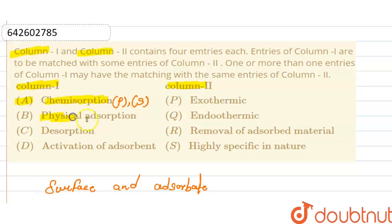The second one is physical adsorption. Every adsorption is always exothermic, because the surface particles of the adsorbent are unstable. When the adsorbate is adsorbed on the surface, the energy of the adsorbent decreases, resulting in the evolution of heat. That's why physical adsorption — or any adsorption — is always an exothermic process.